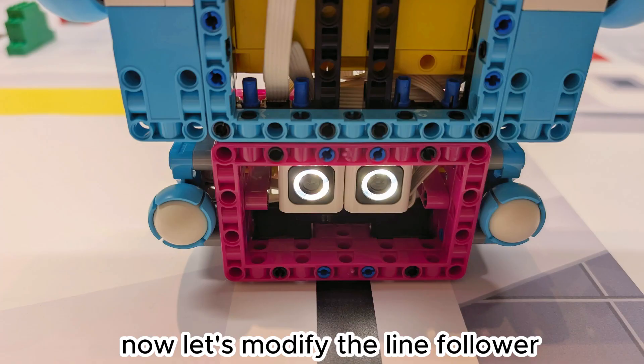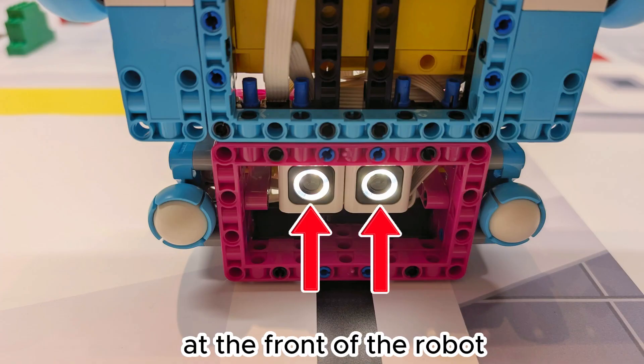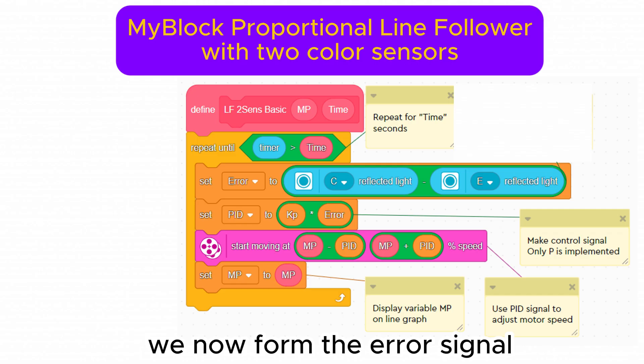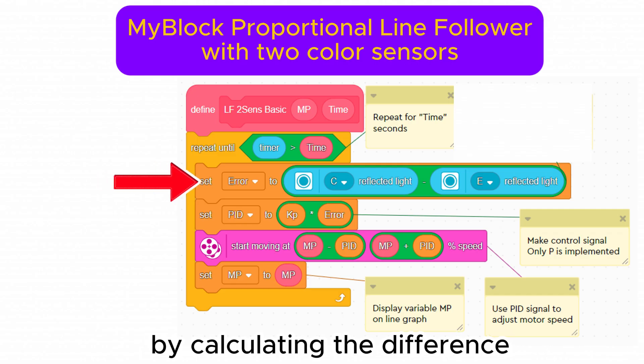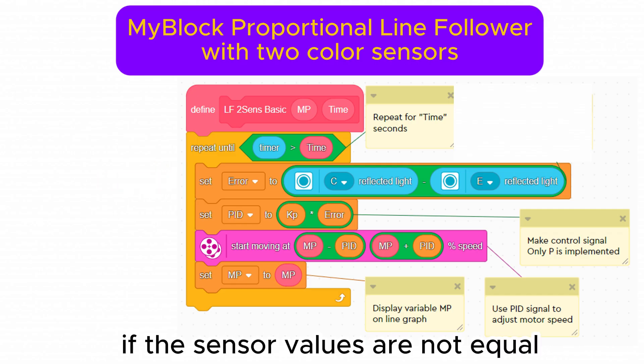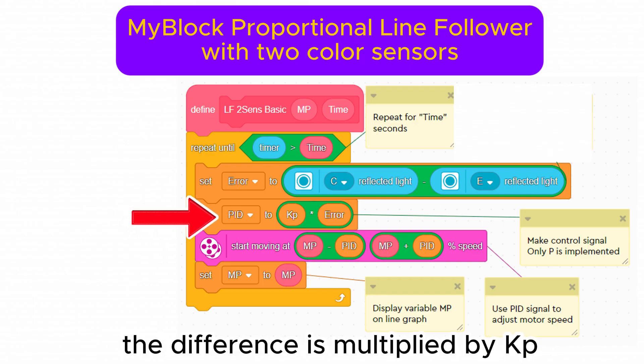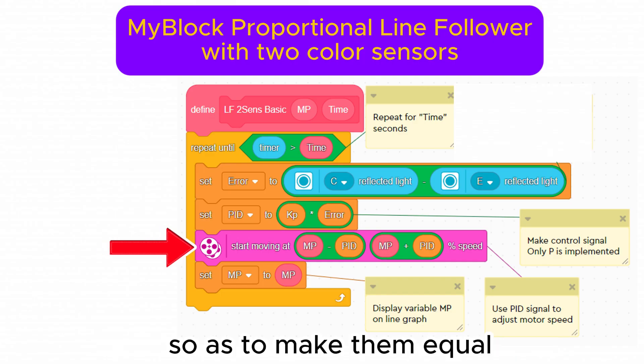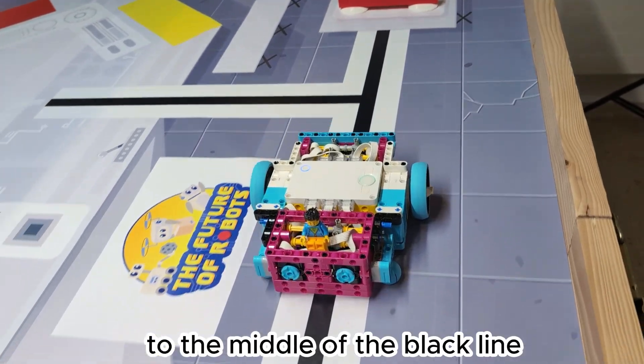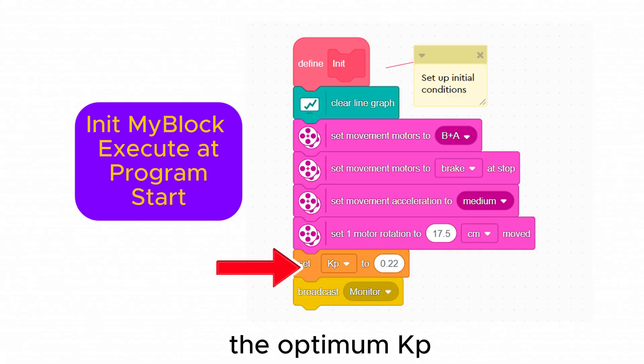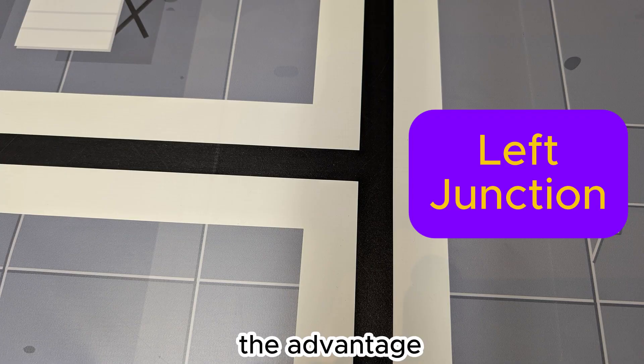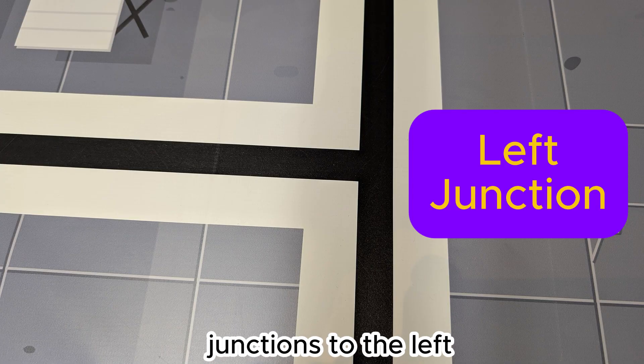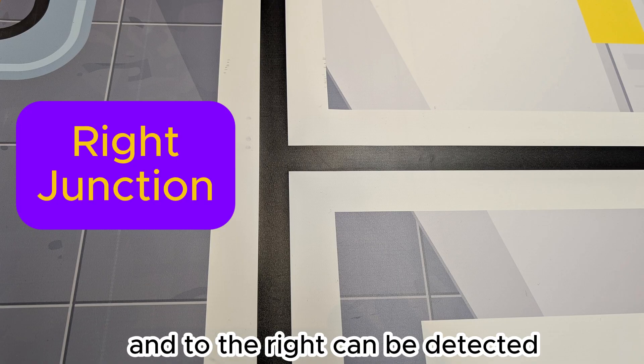Now let's modify the line follower to work with two sensors at the front of the robot. We now form the error signal by calculating the difference between the sensors. If the sensor values are not equal the difference is multiplied by KP and used to adjust the motor speeds so as to make them equal. This moves the robot to the middle of the black line. The optimum KP is half the one sensor value. The advantage of using two sensors is that junctions to the left and to the right can be detected.